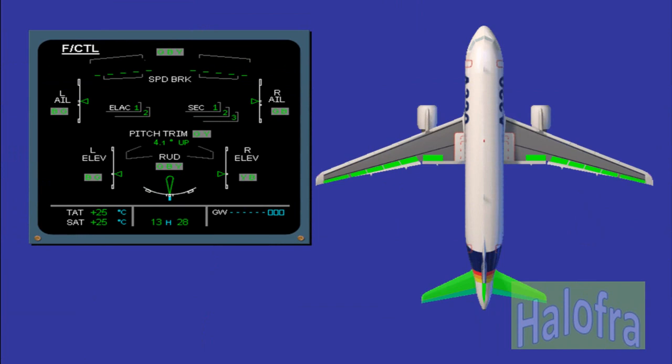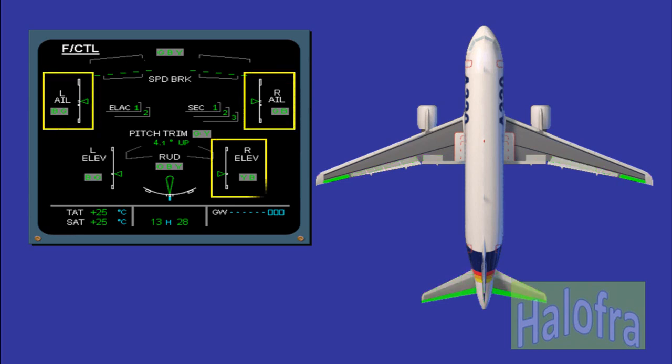Now let's introduce the ECAM flight control page. All the flight control surfaces discussed are displayed. The movements of both ailerons and both elevators are symbolized by a green index moving in front of a white scale. The servo control status, displayed on the side of the white scale, will become amber when the corresponding actuator is not available — due to hydraulic low pressure, electrical control failure, computer failure, etc.